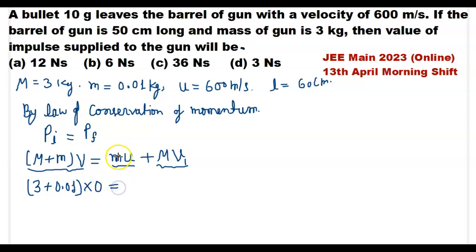This equals mass of bullet 0.01 kg times velocity of bullet 600 meter per second, plus mass of gun 3 times the recoil velocity V1.